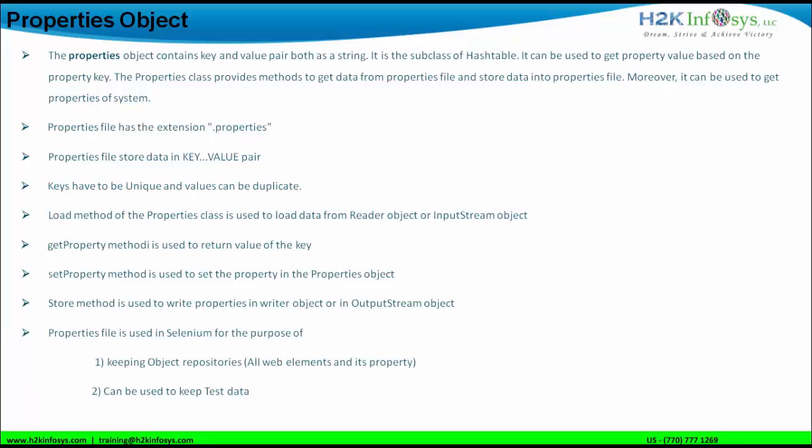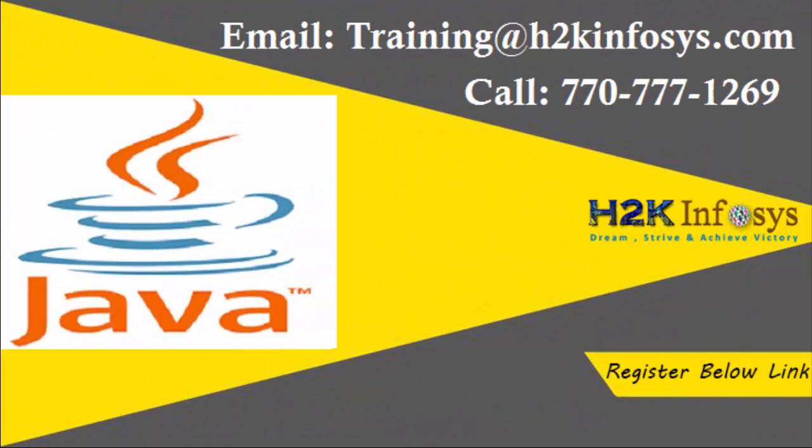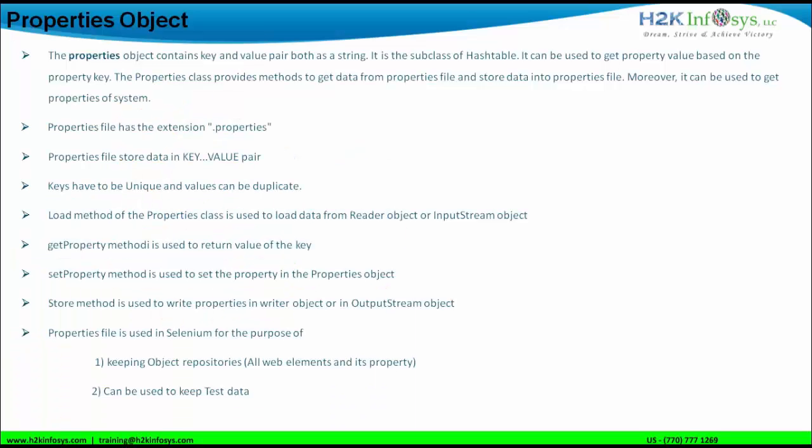The store method is used to write properties to the writer object or to the output stream object. As far as Selenium is concerned, the objective of creating a properties file is to keep object repositories in the properties file and maintain the object repositories from a single location. It can also be used to keep test data required for testing — we might have environment settings specific to system testing or UAT. We can keep separate environments for system testing and UAT using the properties files concept.